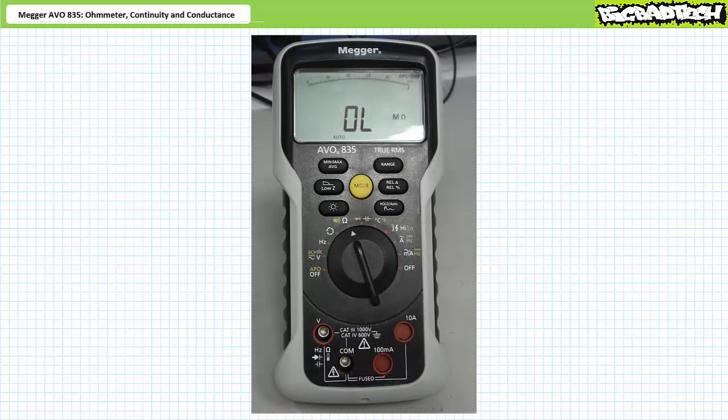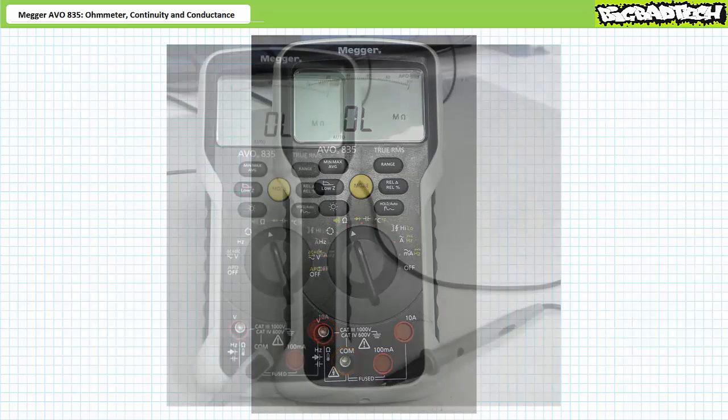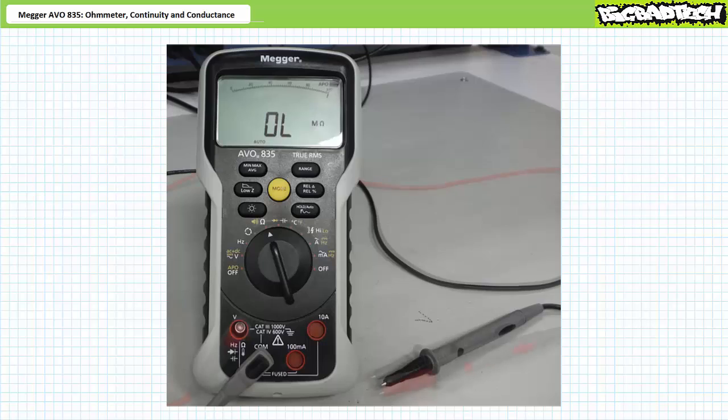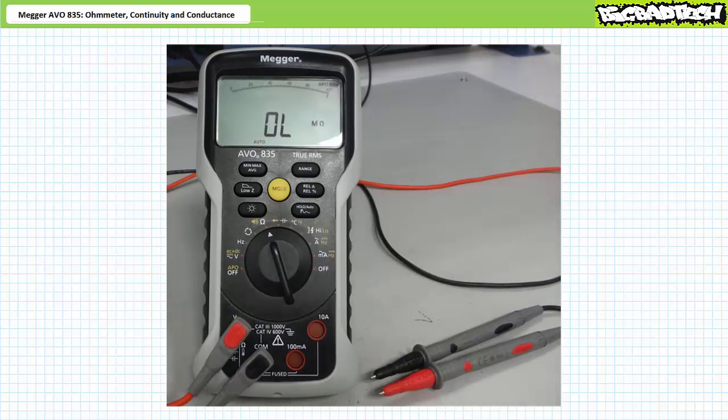To place the Megger AVO835 into ohmmeter mode, rotate the function dial to the selection with the ohm symbol. We'll explore other functions and the function buttons in later lectures. In this position, the AVO835 allows access to the black common terminal and the red live terminal on the left, identified with an ohm symbol. Black lead into the black hole, red lead into the red hole. The ohmmeter measures the resistance of an element in units of ohms placed between the two tips of the leads.